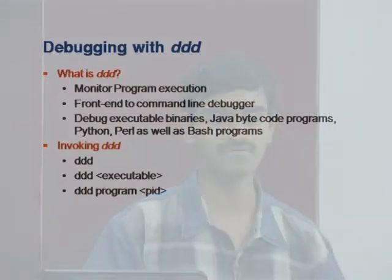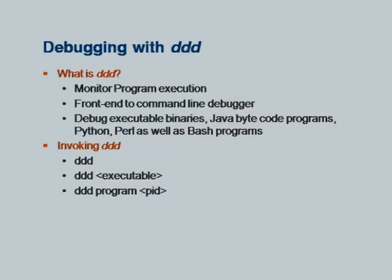DDD is basically a front end — it internally uses other available debuggers and gives you a user-friendly interface. We can use it for debugging executable binaries, output of our GCC or G++ compiler. We can also use it for Java bytecode output, Python, Perl — support for many different languages is available.